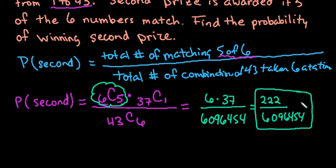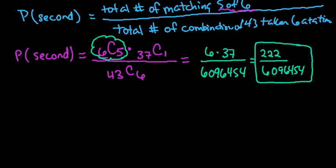As a fraction, we can see that only 222 times out of 6,096,454 times will these match. I can reduce this fraction, so if I reduce this fraction, it becomes 111 over 3,048,227.